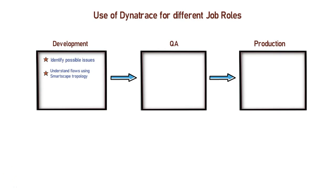Apart from understanding the flow of your application, you can also use Smartscape topology to cross-check the design and flow changes you have done to your application. The next scenario where a developer can use Dynatrace is when they want to check the response time of each and every transaction made across the application. If you are trying to optimize performance in your application, Dynatrace will be a handy tool to check the response time of your transactions.